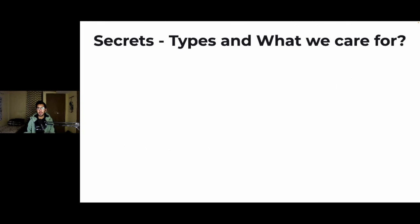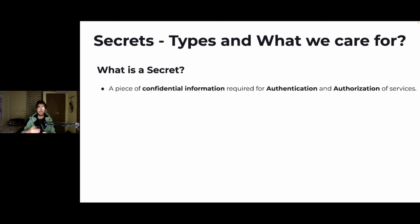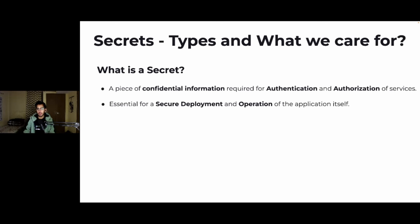Now let's talk about secrets. What is a secret? It's a piece of confidential information required for authentication and authorization of different services associated with your application — that can be databases, API keys, usernames and passwords. Secrets are essential for a secure deployment process and the operation of the entire application. The secrets we are concerned with here are those of the application source code that we are storing in Git.